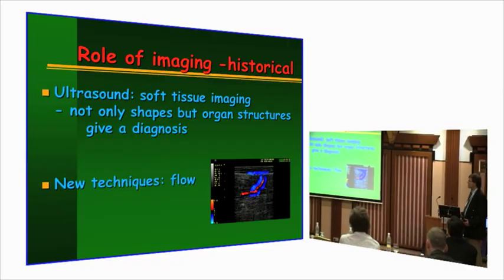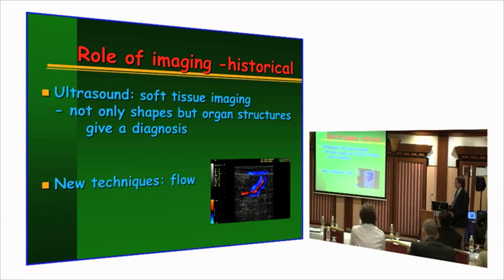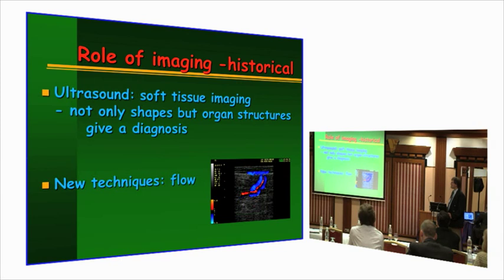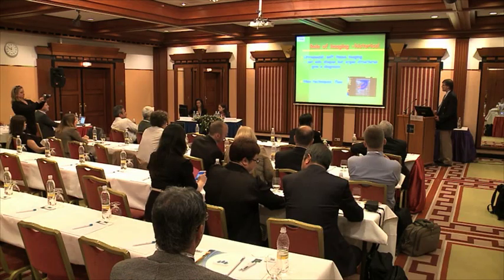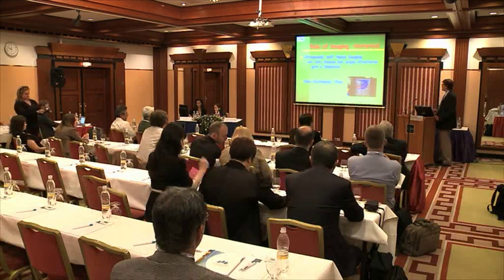With X-rays, it's only shapes and shadows that we see. The next step was ultrasound, which went a bit further — we already had the chance to see the tissues and structures themselves. So it was not only the shape of a tumor, but we saw the tumor itself with its structure and changes. And later on, with Doppler, we became able to see the flow — not only in vessels, but also in soft tissues, including pathological structures such as in tumors.